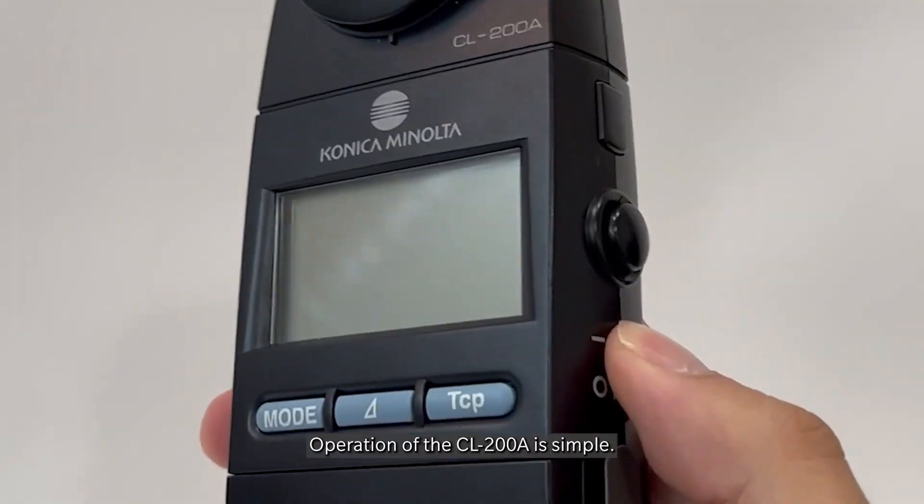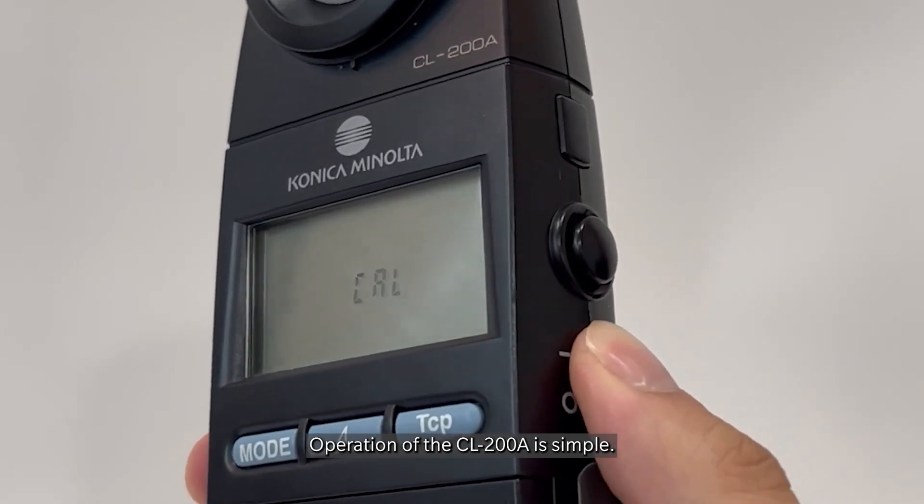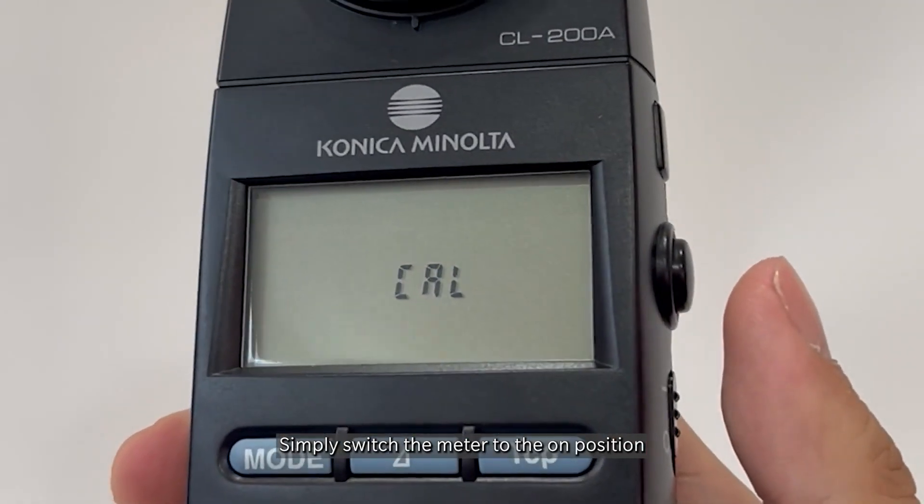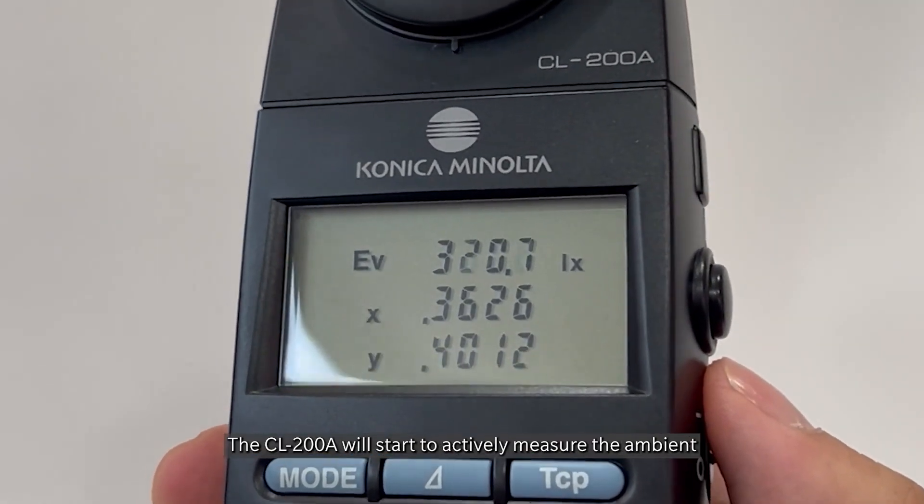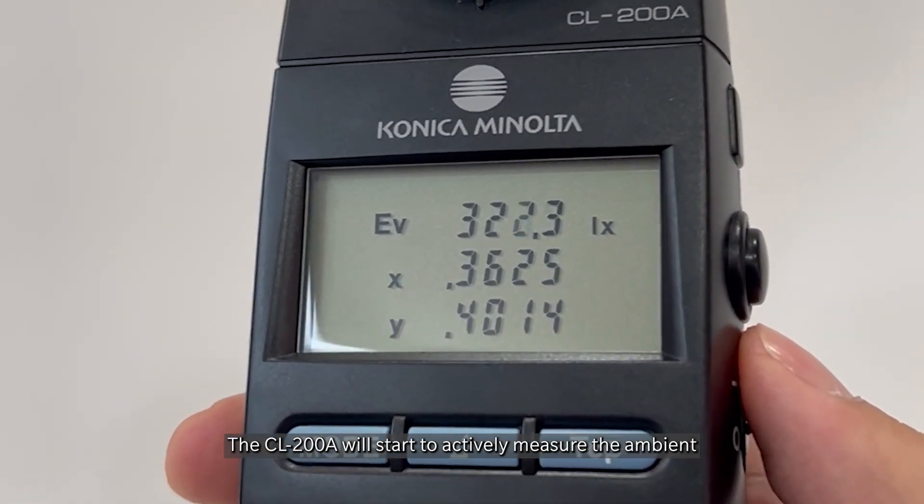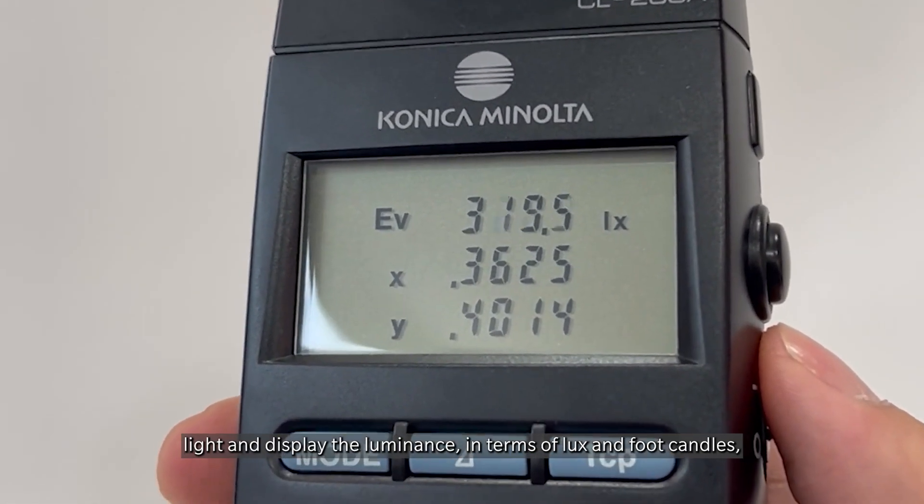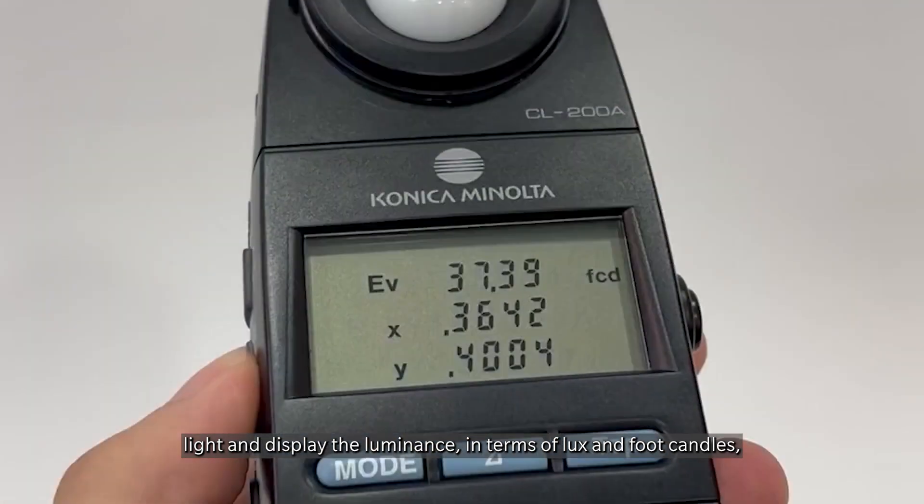Operation of the CL200A is simple. Simply switch the meter to the on position and the instrument will self-calibrate in a few seconds. The CL200A will start to actively measure the ambient light and display the luminance in terms of lux and foot candles.